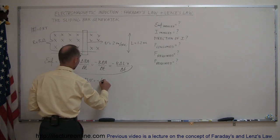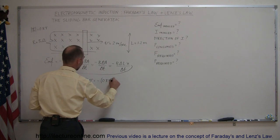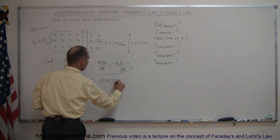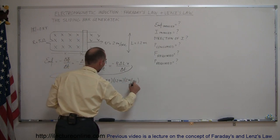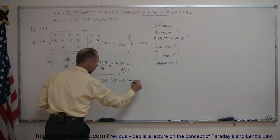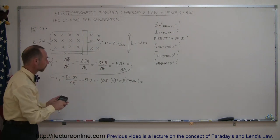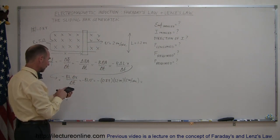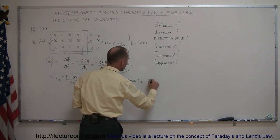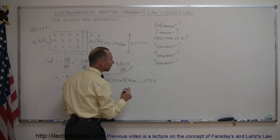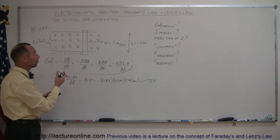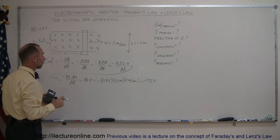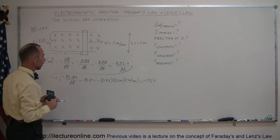Plugging in the numbers: minus the magnetic field strength of 0.8 teslas, times the length of 1.2 meters, times the velocity of 2 meters per second gives us an EMF of 1.92 volts. The minus sign simply indicates that it will create an EMF that sets up a current in opposition to the change of flux that caused it — which is Lenz's Law.